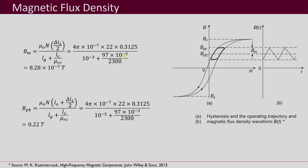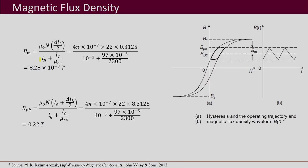Now let us do some checking. With the designed air gap length, number of turns, wire gauge, and selected core, we calculate BM — the flux density amplitude — by substituting all obtained values into the BM equation. This BM value is what affects the core loss and is required for calculating core loss.